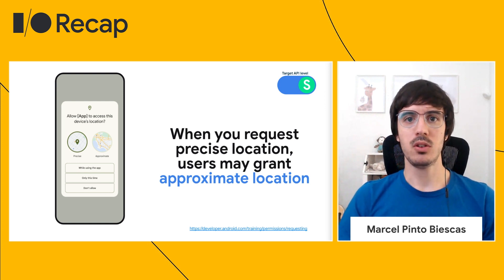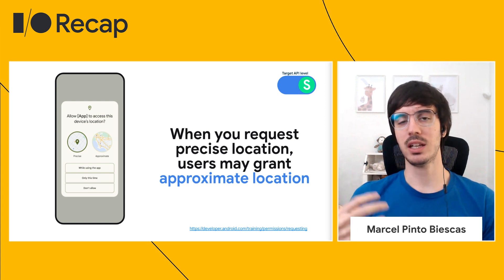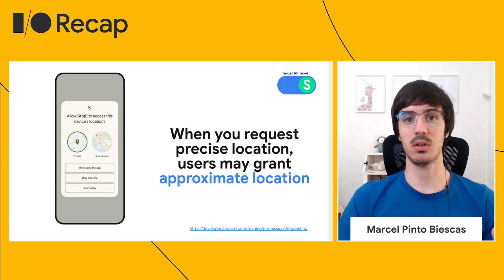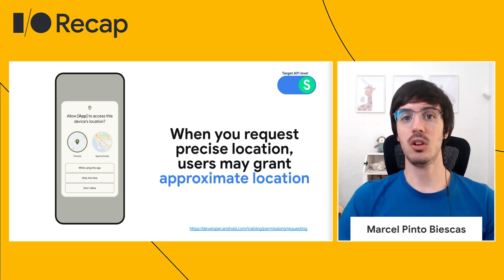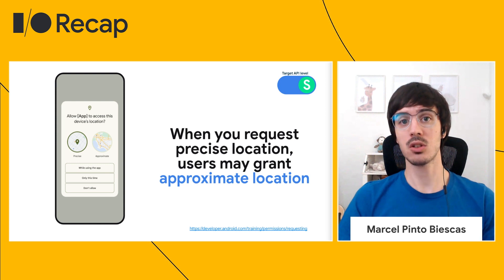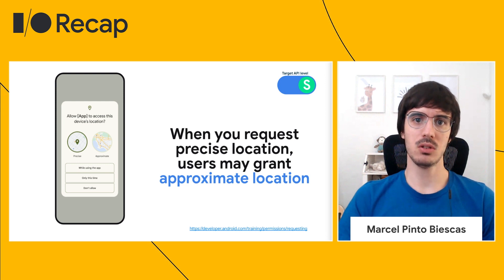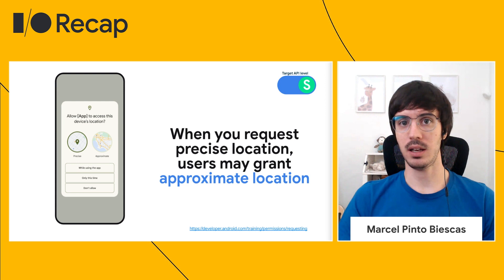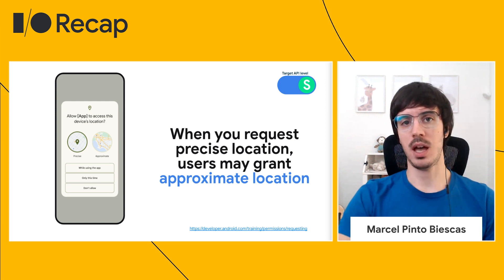On Android 12, we are bringing more control over location sharing. You know there is ACCESS_COARSE_LOCATION and ACCESS_FINE_LOCATION — fine location grants precise location while coarse is more approximate. On Android 12, regardless of whether the app requests fine location, the user will have the option to grant only coarse location by selecting 'approximate' on the dialog. So first, check if you actually need fine location; if not, only request coarse. If you do need fine, make sure you handle this case. This applies only to apps targeting SDK 31.